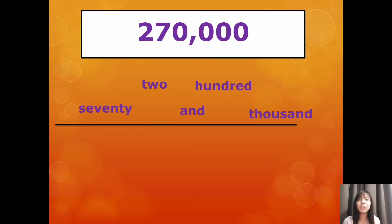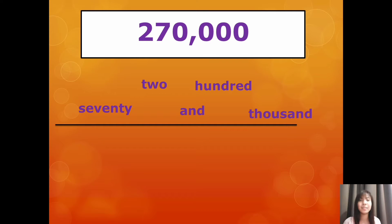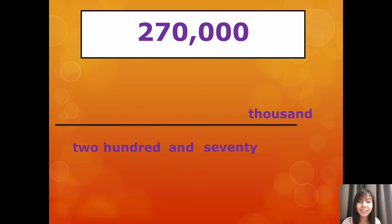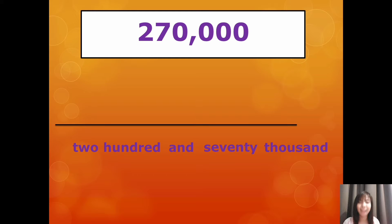So, you need to practice and memorize the spelling of the words, because it is really important that you write the correct spelling when writing numbers in words. So, which word comes first? The word: two hundred and seventy thousand. Please read: two hundred and seventy thousand. Please take note of the spelling of the words.